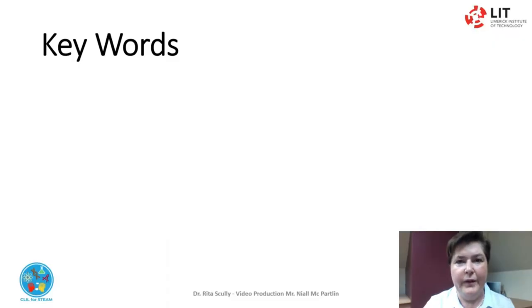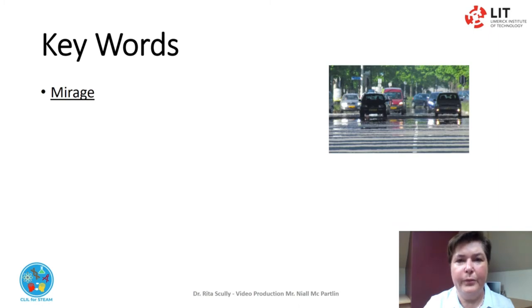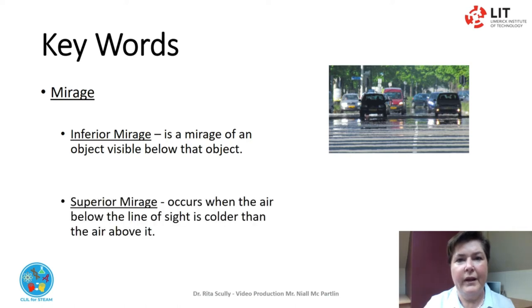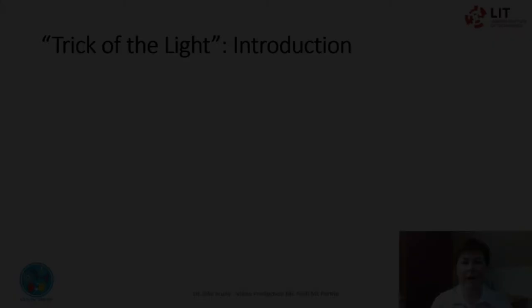In this video there are some key words that we use. Mirage: mirages are caused by the effect particular atmospheric conditions have on the passage of light through the atmosphere. Inferior mirage: a mirage of an object visible below that object. Superior mirage: occurs when the light below the line of sight is cooler than the air above it. Trick of the light.